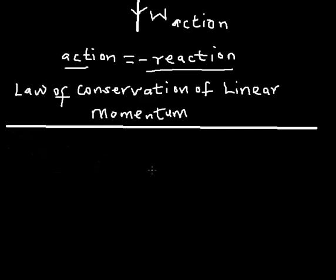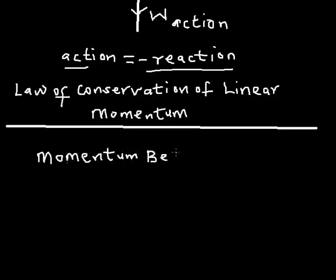If an object collides with another object, the total momentum evaluated before the collision and the total momentum evaluated after the collision are always constant. Simply put, for momentum to be conserved according to the law of conservation of momentum: momentum before collision is always equal to momentum after collision.